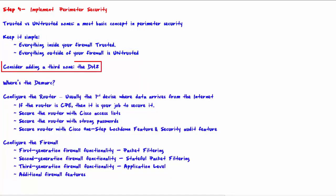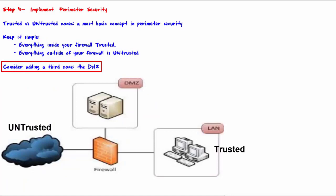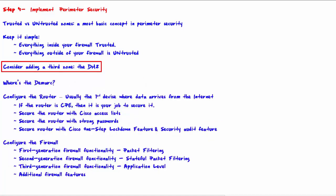Consider adding a third zone — the DMZ. The two-zone architecture is generally sufficient for SOHO setups. Businesses that have servers accessible to the public may add a third zone called the DMZ and place the servers in it. Because these servers may be vulnerable to attacks from the untrusted network, communication from the DMZ to the trusted zone is carefully controlled by the firewall.